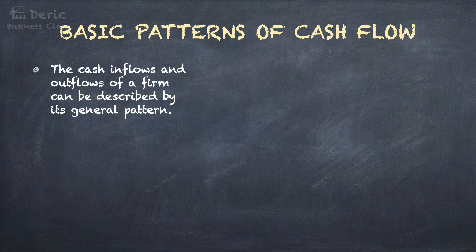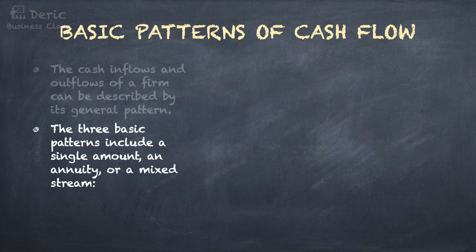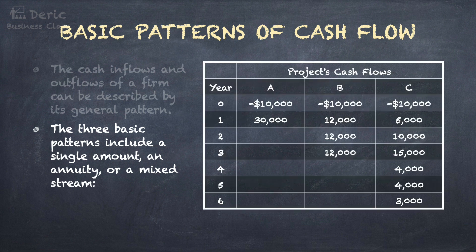The cash inflows and outflows of a firm can be described by its general pattern. The three basic patterns include a single amount, an annuity, or a mixed stream. As shown in the table, project A is a single amount cash flow, in which there is only one cash inflow on year one. Project B is an annuity, because there are repeating cash inflows from year one to year three. Project C is a mixed stream, as the cash inflows from year one to year six are all different. These are the three basic patterns of cash flow that you will find in the questions of time value of money.